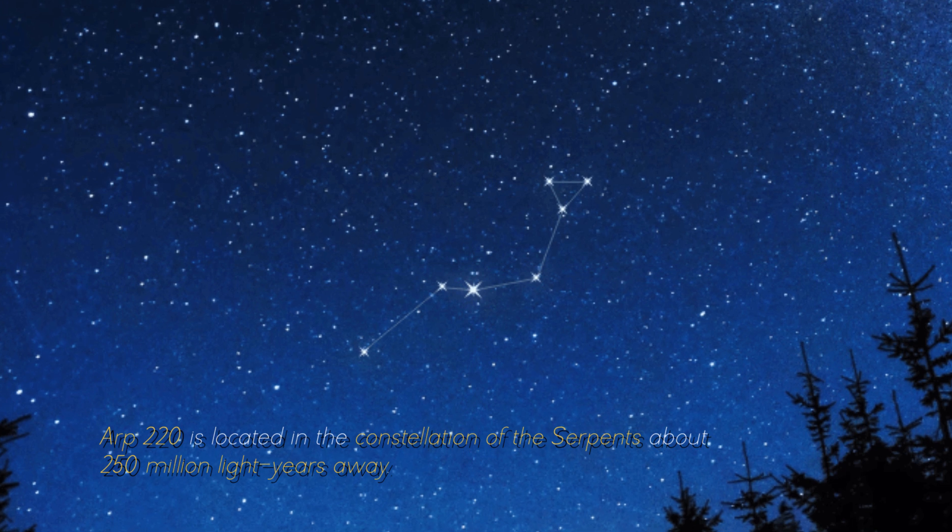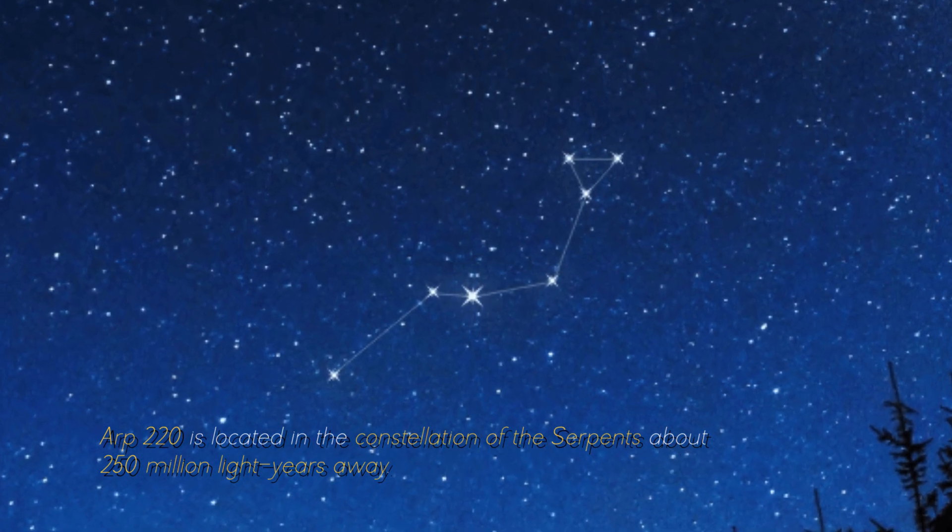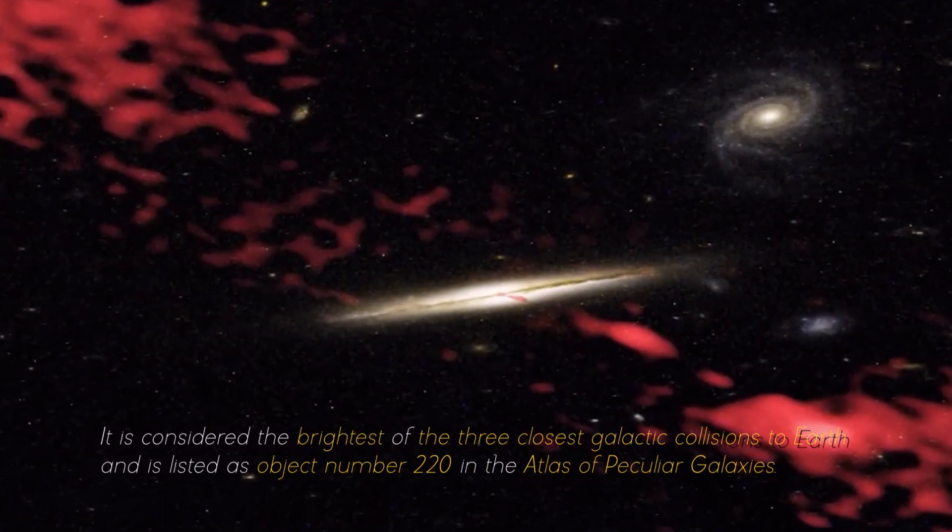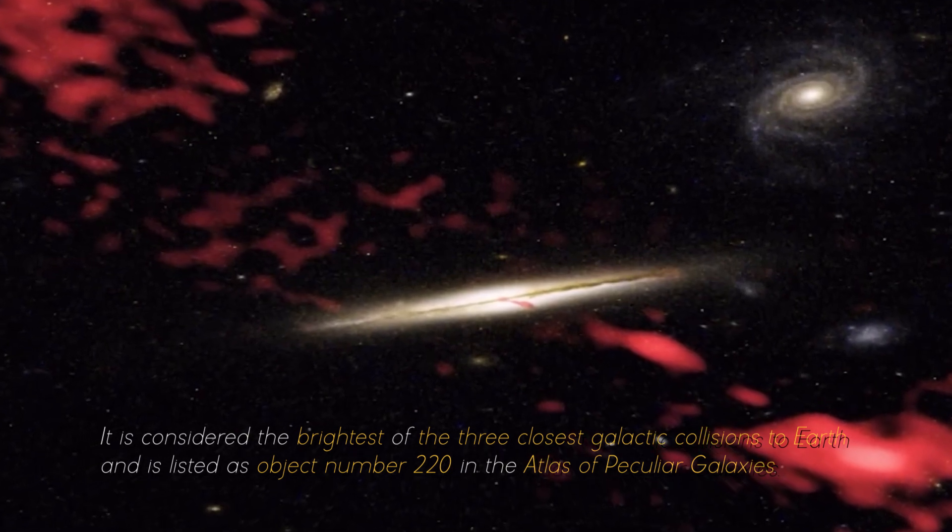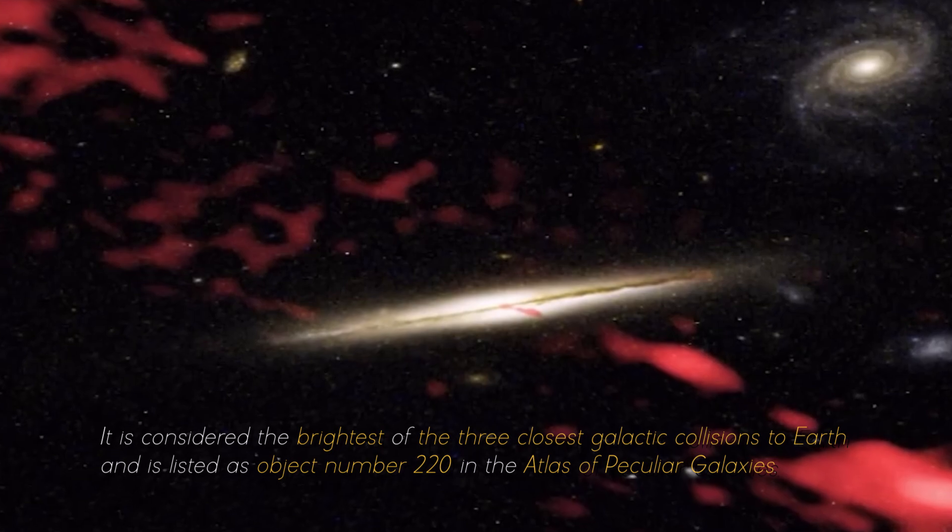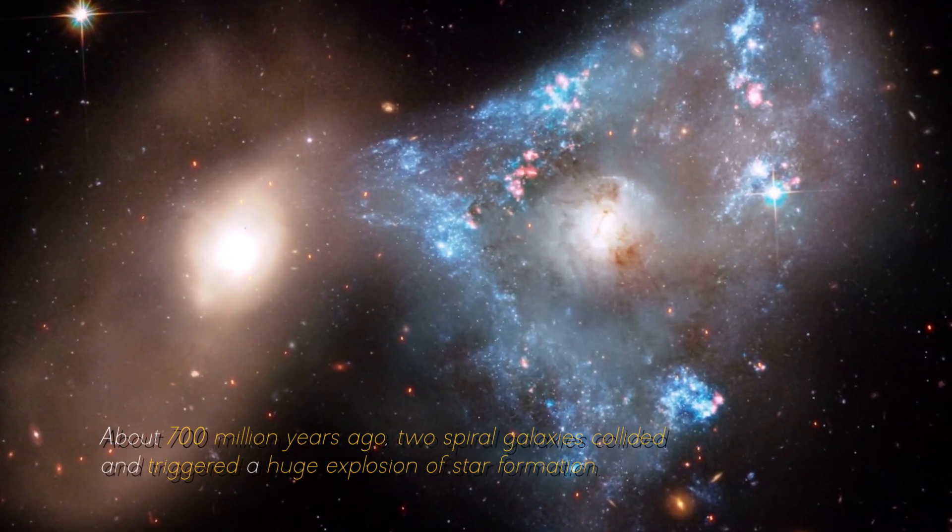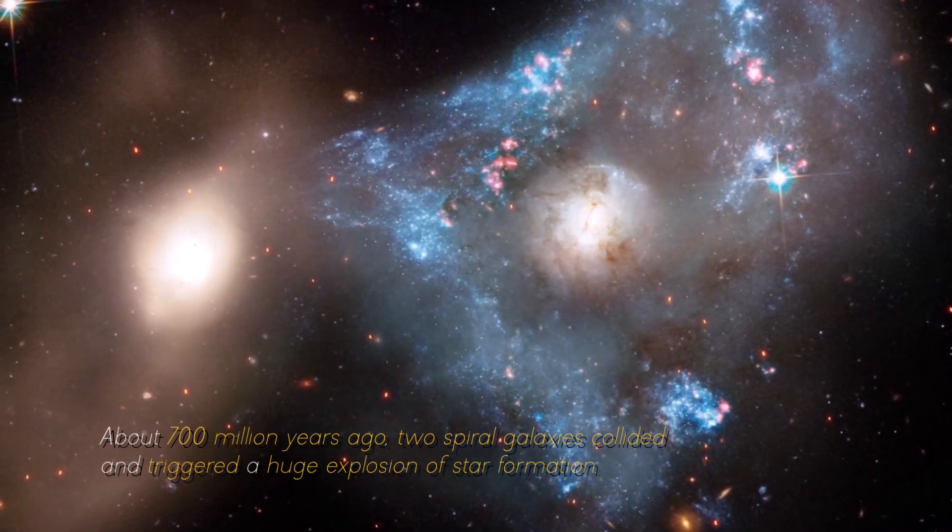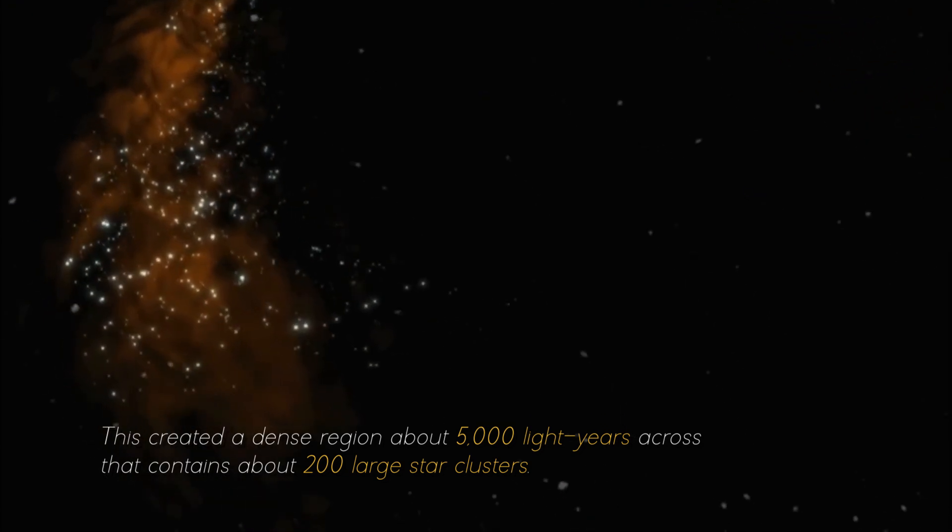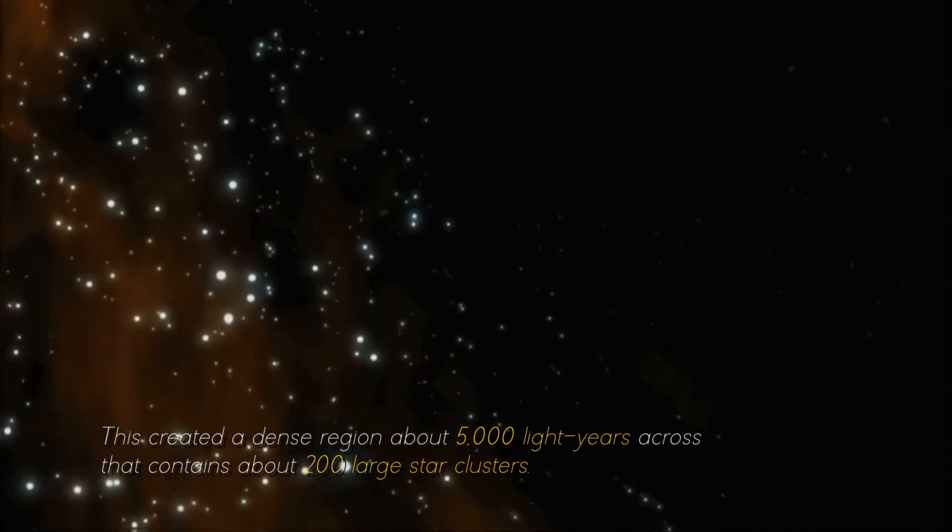ARP 220 is located in the constellation of the Serpents, about 250 million light years away. It is considered the brightest of the three closest galactic collisions to Earth, and is listed as object number 220 in the Atlas of Peculiar Galaxies. About 700 million years ago, two spiral galaxies collided and triggered a huge explosion of star formation.